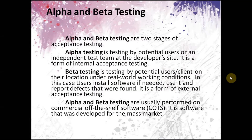Alpha and beta testing are two stages of acceptance testing. If you would like to know more about acceptance testing, you can watch a video on my channel called 'Test Levels'. Alpha testing is tested by potential users or an independent test team at the developer's site. It is a form of internal acceptance testing.